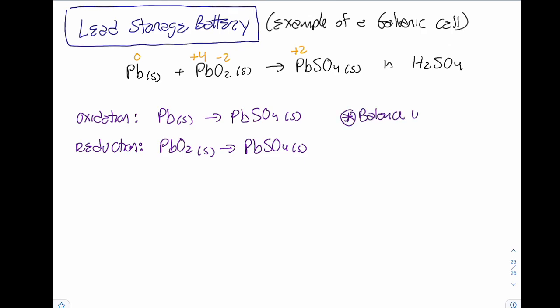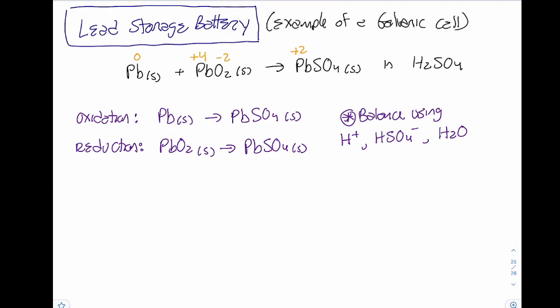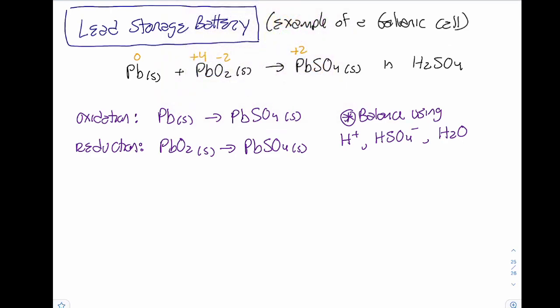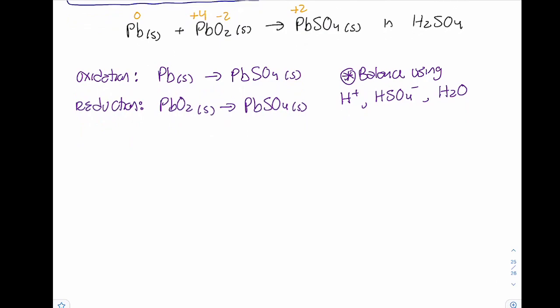Because we're using sulfuric acid, a strong acid, it dissociates into hydrogen ions and bisulfate ions (HSO₄⁻). We're also in aqueous solution so we can use water. These are the species we can add wherever needed to balance our half-reactions. Let's balance the oxidation half-reaction first.